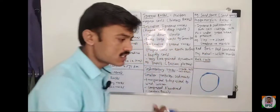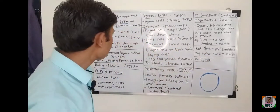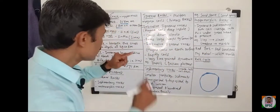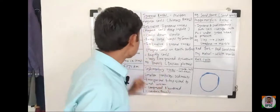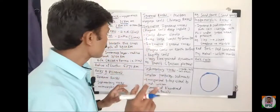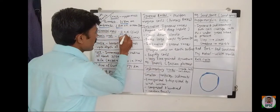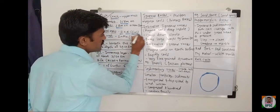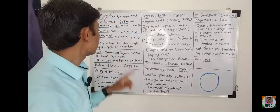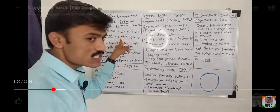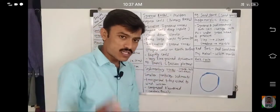Continent pe jo crust rahega - whatever the crust is on continent, what does that contain? That contains silica and aluminium. So it is called SIAL - silica and aluminium. It can be asked. Remember, continental mass is containing silica and aluminium. Therefore, it is called SIAL.